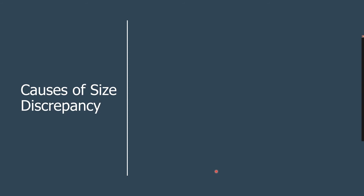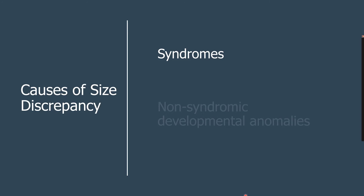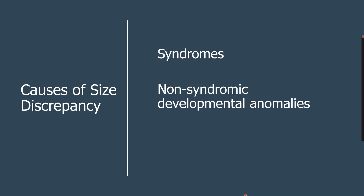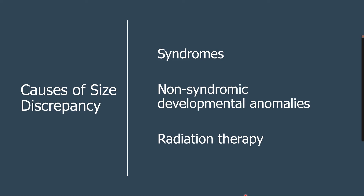The cause of size discrepancy of the teeth can be due to several conditions. One is syndrome — there are several syndromes that can affect the size of a tooth. There may also be non-syndromic developmental anomalies. Finally, radiation therapy to a child may also cause smaller than normal size teeth.